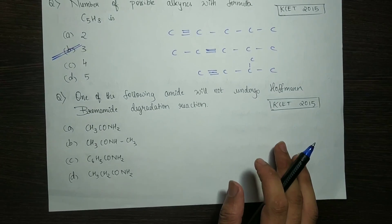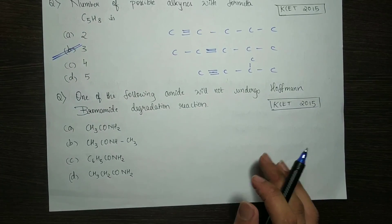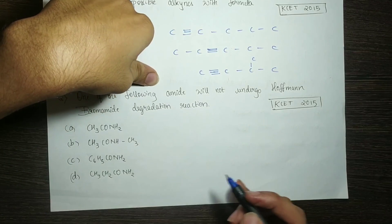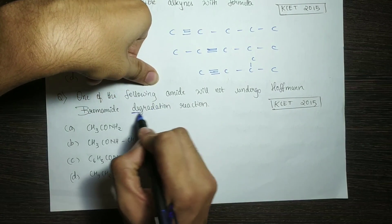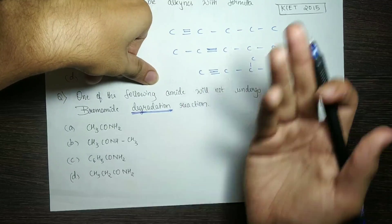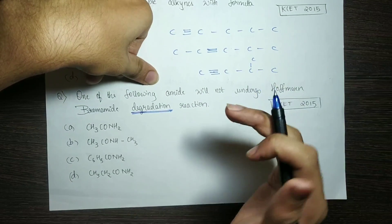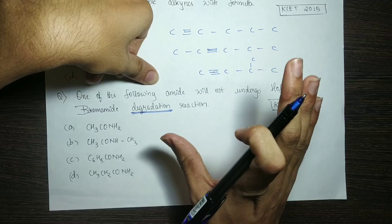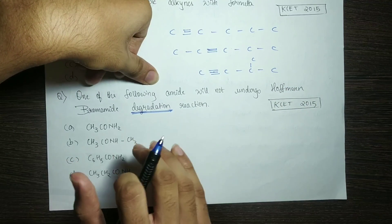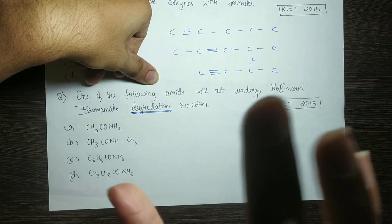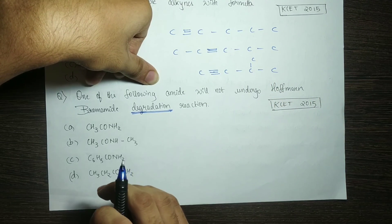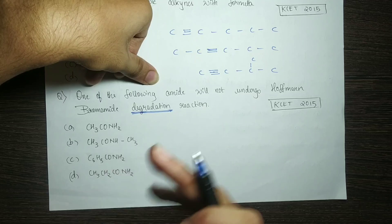The next question: which of the following amides will not undergo Hofmann Bromamide Degradation reaction? Degradation means one carbon is removed, so the final product has one carbon less than the initial reactant.